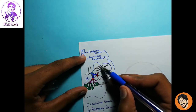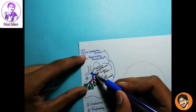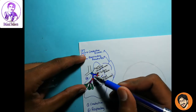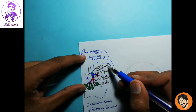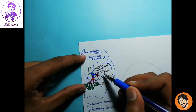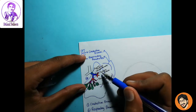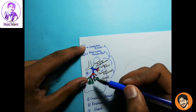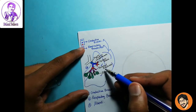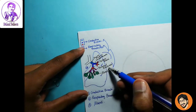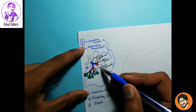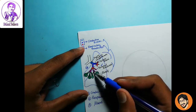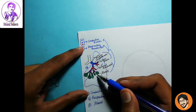1. Primary principal bronchiole. 1. Divide bronchiole. 2. Secondary bronchiole. 3. Secondary. 3. Tertiary. 4. Terminal bronchiole. 4. Bronchiole. 5. Bronchiole. 5. Alveoli.